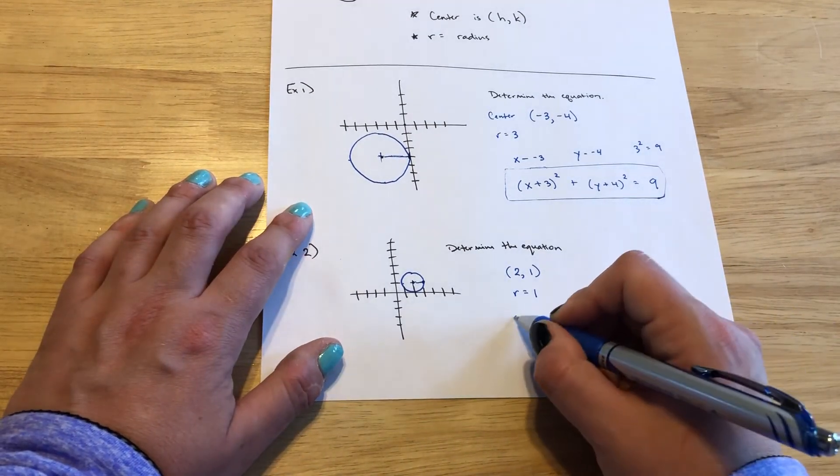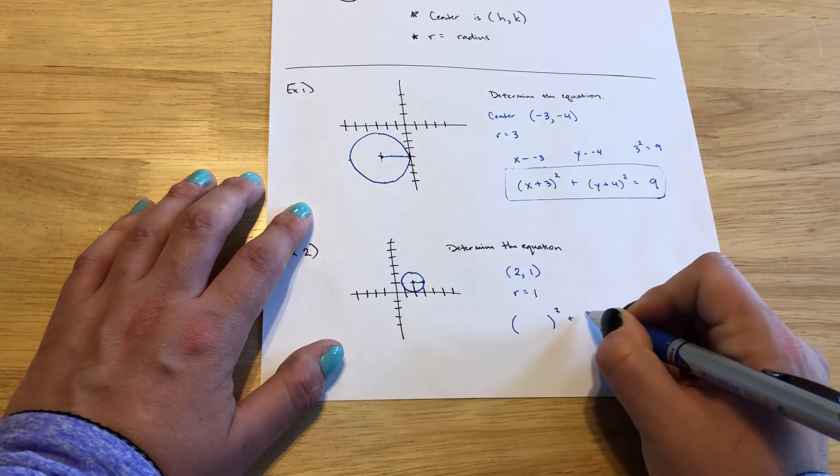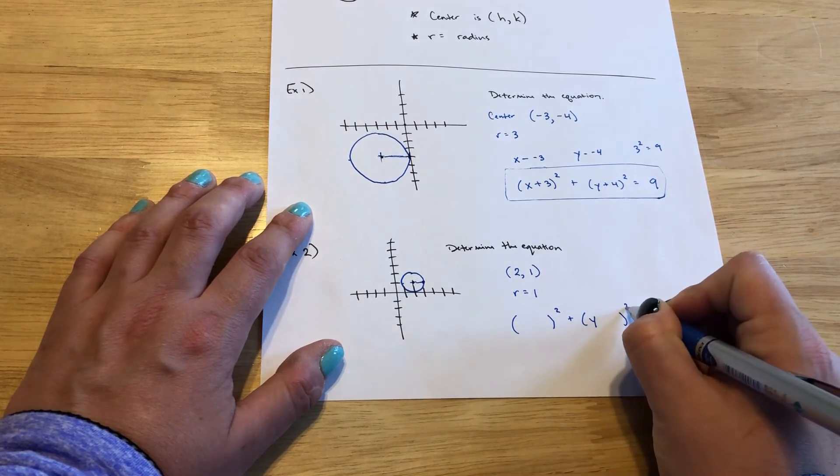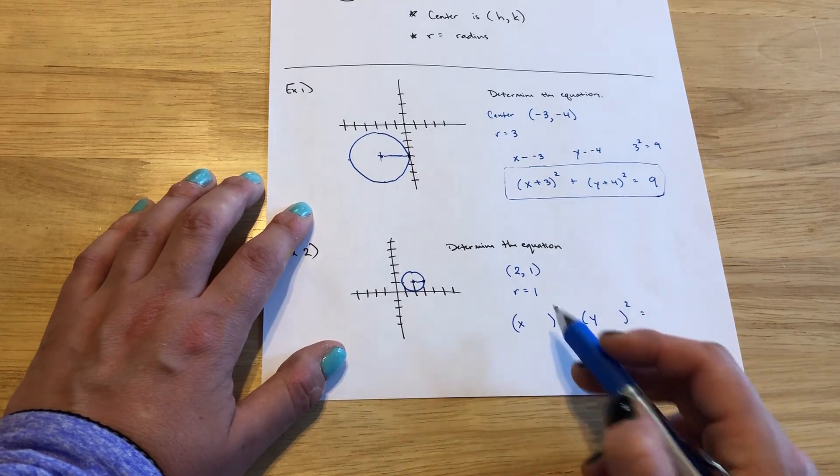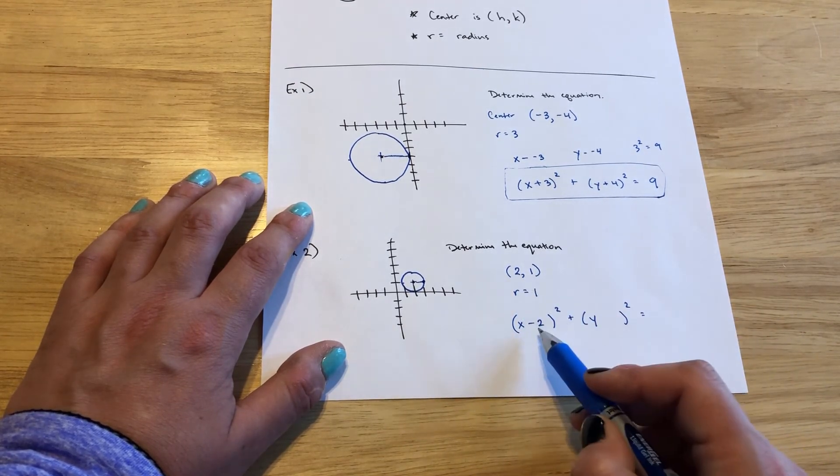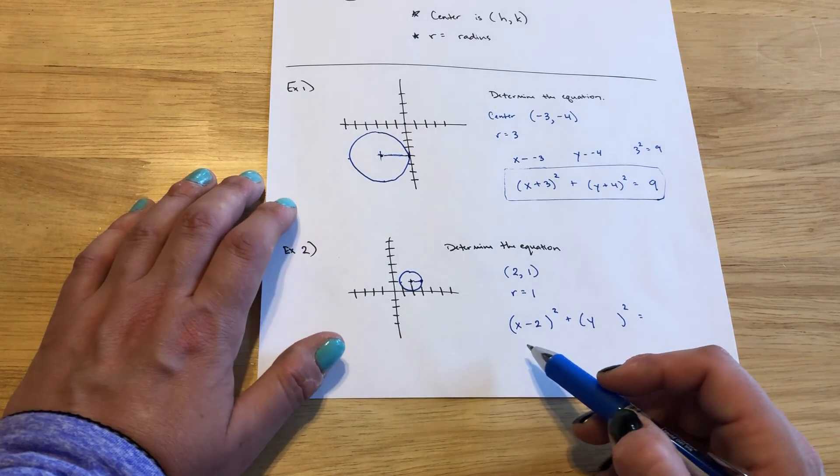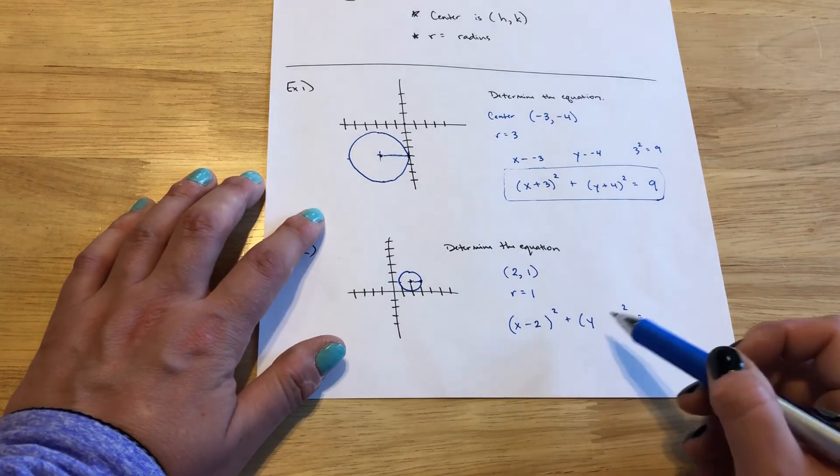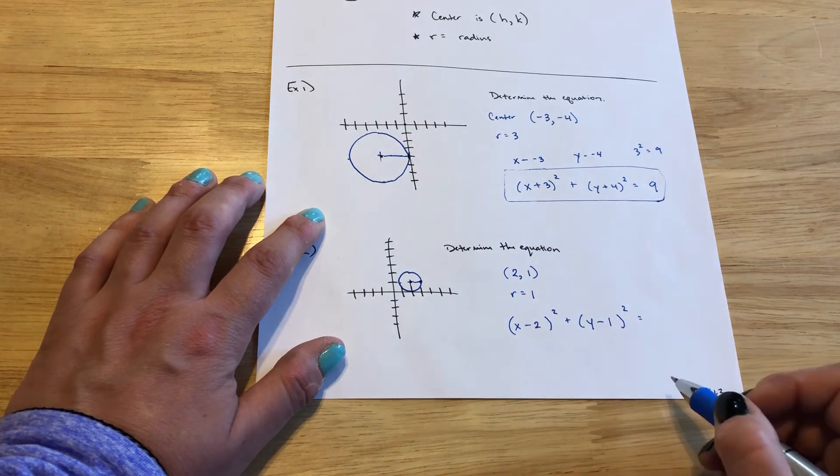So when we go through putting x minus h squared and y minus k squared, with the x we would have x minus 2. This one was a positive, so we actually get to see the minus from our formula. And we have y minus the y value, so y minus 1.